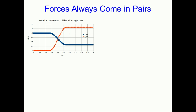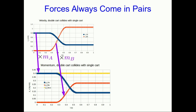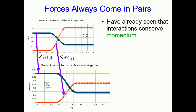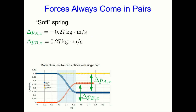Forces always come in pairs, and this is related to the fact that interactions are always between pairs of objects. Let's see how experiment shows us this, because it also shows something else about these pairs of forces. Consider our usual situation of two carts colliding. If we multiply the vx-versus-t graph by each of the inertias, we get our momentum-versus-time graph. We've already seen that interactions conserve momentum — the change in momentum of one object is always the negative of the change in momentum of the other. In this experiment, a fairly soft spring has been used as the interaction between the two carts, so there is some time for the collision to take place — in this case about 0.25 seconds.